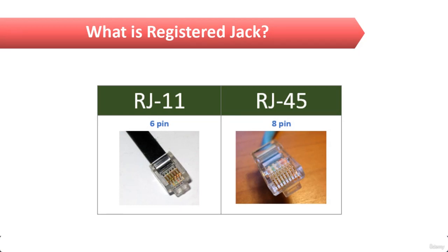BNC connectors, which we have already seen in the last lecture, won't fit on UTP cable. They are used for coaxial cables. Therefore you need a registered jack, that is RJ, which you are familiar with because most telephone connectors use RJs. The connector used with UTP cable is called RJ11, seen on the left-hand side image on screen, while RJ45 has 4 pairs as seen on the right. RJ11 has 3 pairs, that is 6 pins, and RJ45 has 4 pairs, that is 8 pins.